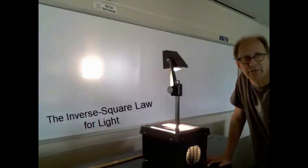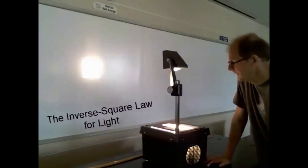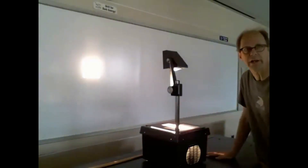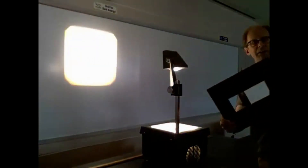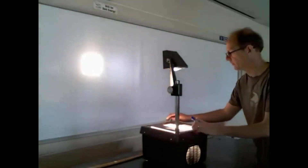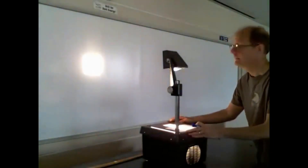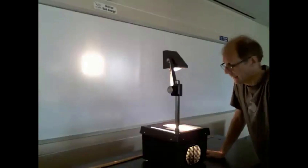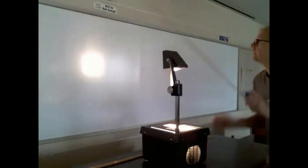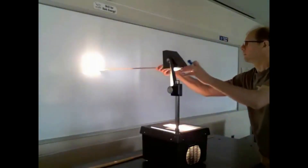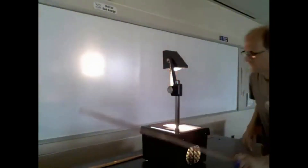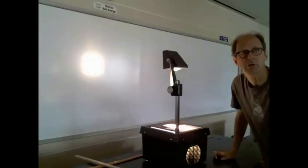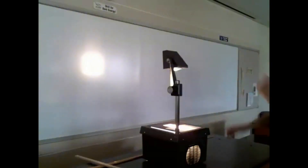I'm going to do a quick demonstration of the inverse square law for light. I have one of those old style overhead projectors with a mask on it that has a square cut out of it, so I can project a square up on the board. Right now the projector is one meter away from the wall. So what I'm going to do is I'm going to mark the outline of that square on the wall.